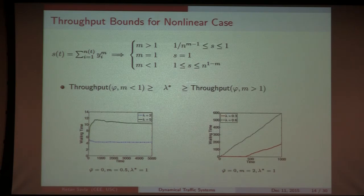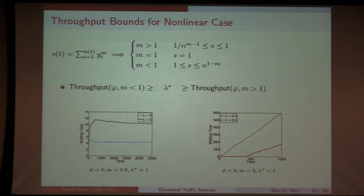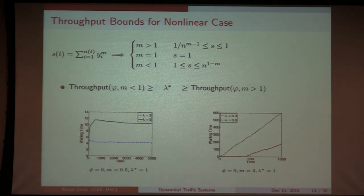Discussion on lane changing: This model is a single-lane setup, which is also the case for platooning and string stability literature. Lane changing models in the literature are behavior-based and rule-based, not as clean as car-following models. The arrival distribution phi, if not a Dirac but uniform or some other distribution, is a loose way of modeling lane-changing behavior. Allowing the arrival process to depend on system state is one way to model lane changing — imagine two parallel queuing systems where vehicles can join either in a state-dependent fashion.